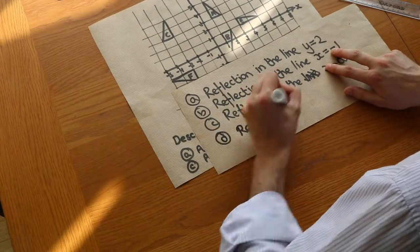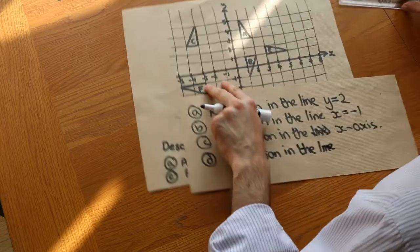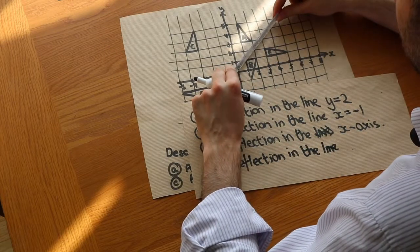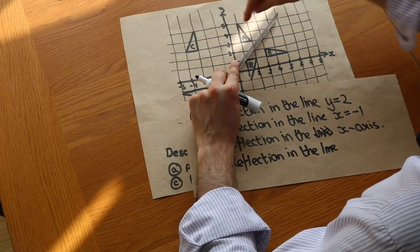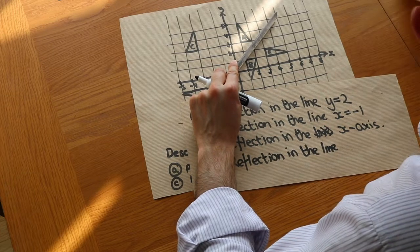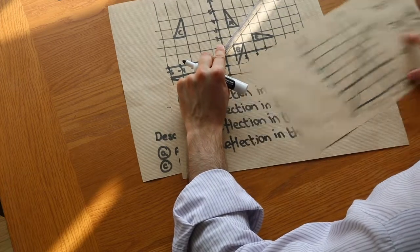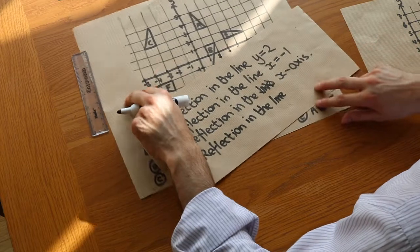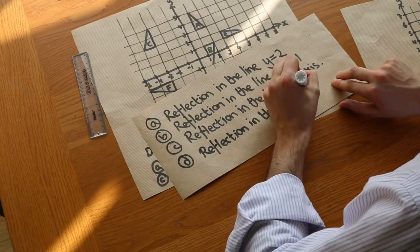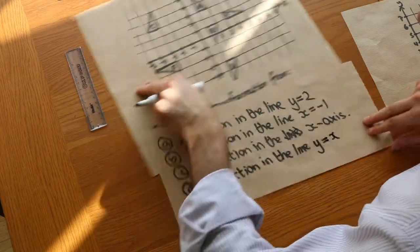So A to E here. So it's a reflection in the line. Now, this is a diagonal line this time. Can you see that the line of reflection is like that to get from A to E? And we saw earlier that the equation of that line was Y equals X. You can get away with X equals Y, but let's write the line Y equals X.